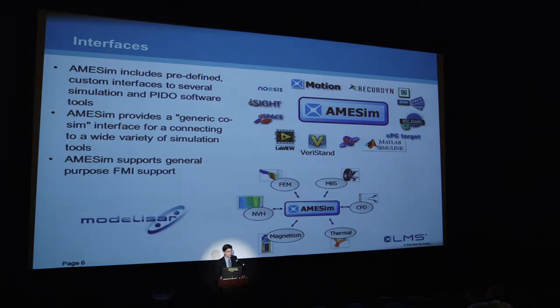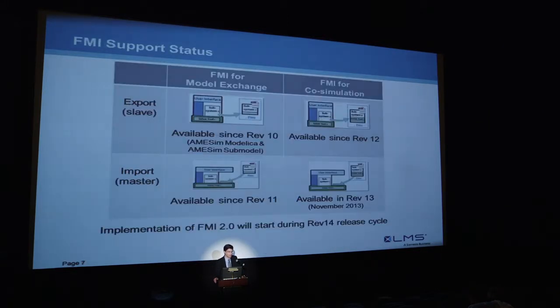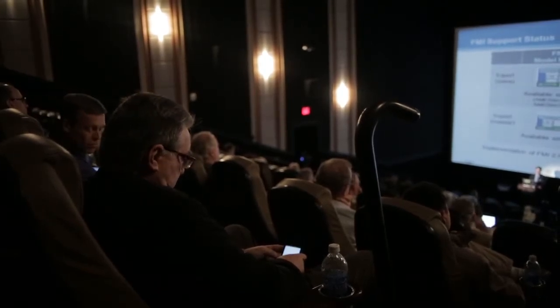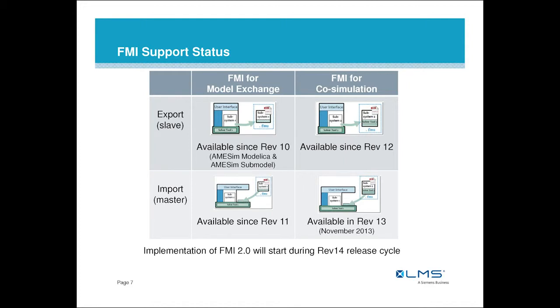More specifically, we'd like to talk about the FMI support. We began in Rev 10 with FMI for Model Exchange, doing exports in the Modelica platform and the Aimsim submodels. In Rev 11 we introduced the import ability for FMI Model Exchange. In Rev 12 we added the CoSIM exports. Rev 13 is due out at the end of this month, and that is where we'll add the import for FMI CoSIM, giving us essentially the full suite of FMI support. This is all done using the FMI 1.0 specification. We've just begun the Rev 14 cycle, where we'll start work on the FMI 2.0 specs now that the release candidate is out.